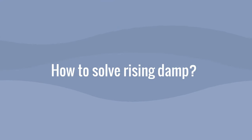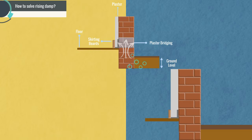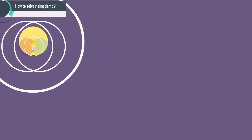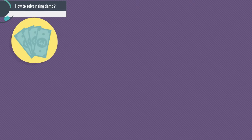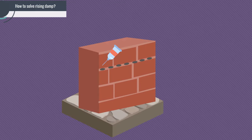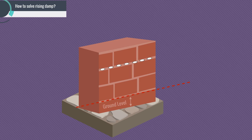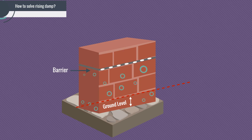How to solve rising damp? Fixing rising damp problems can often be resolved by installing or repairing a damp proof course to prevent capillary action creating damp problems in the home. The most common and cost-effective way of solving rising damp is through the damp proof injection method, where a damp proof solution is injected into holes drilled into the mortar course of the wall just above ground level. Once this solution cures, it creates an impermeable and permanent barrier that will block the rise of water into the building.